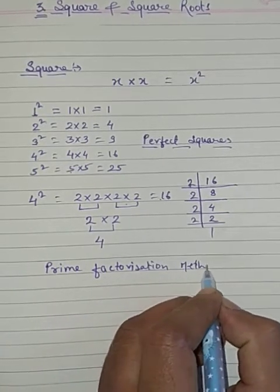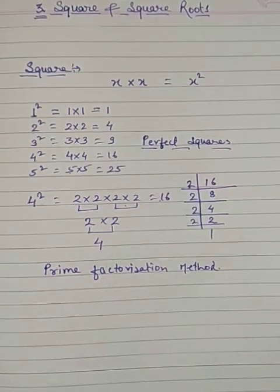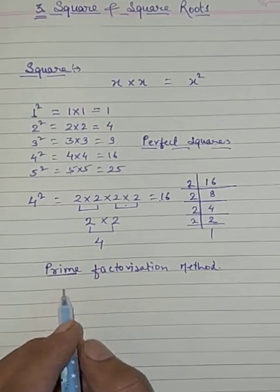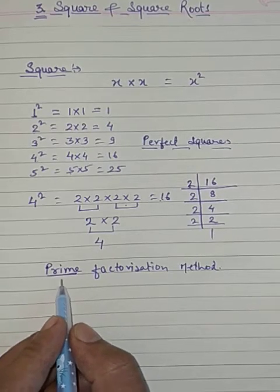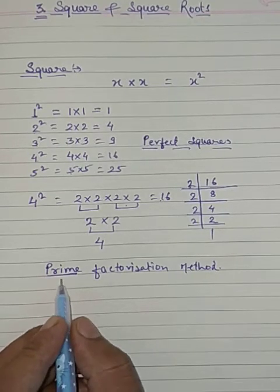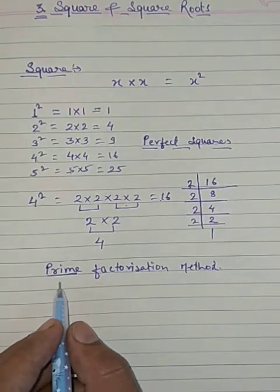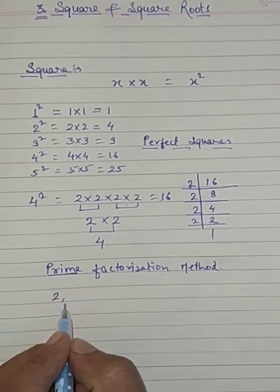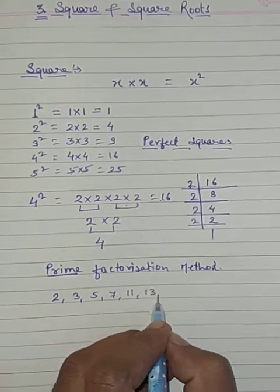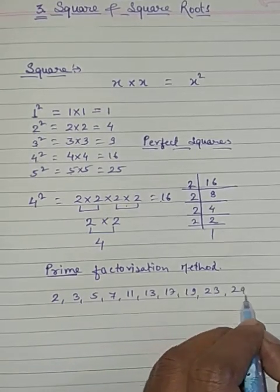What is this method? In previous classes we studied prime numbers. Prime numbers are those numbers which are divisible by 1 and by themselves only. The prime numbers are: 2, 3, 5, 7, 11, 13, 17, 19, 23, 29, etc.